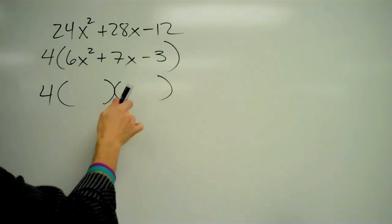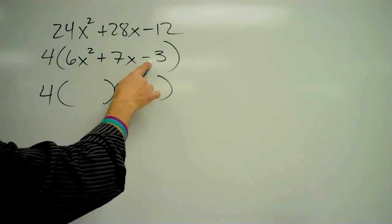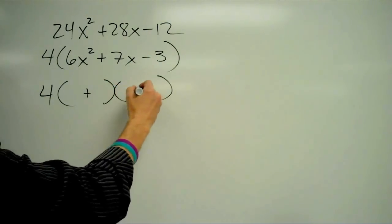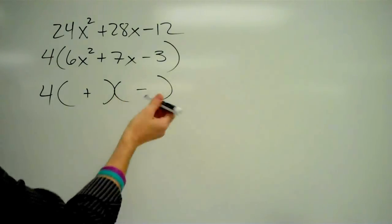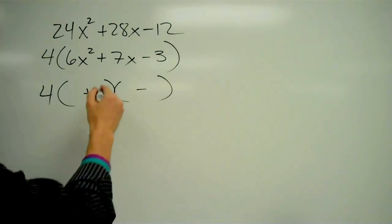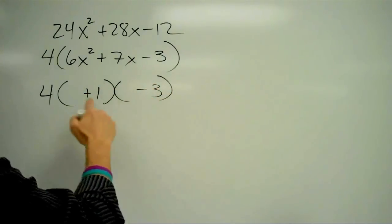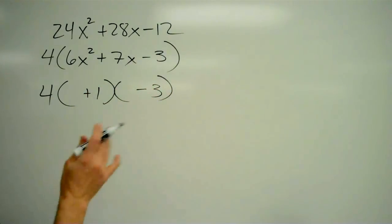Negative 3. So first off, I have a product that is negative, which means I have a positive and a negative. And 3, well, there's really only one way to get 3. That's 3 times 1. So I'll put the 1 here and the 3 here, and maybe I'll have to change that positive and negative later. We'll see.